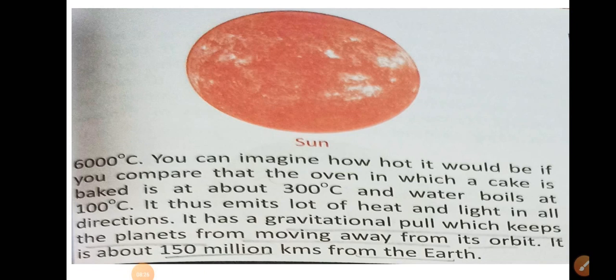The sun emits a lot of heat and light in all directions, as it is a star. It has a gravitational pull which keeps the planets from moving away from their orbits.